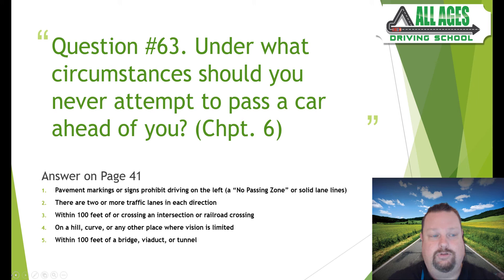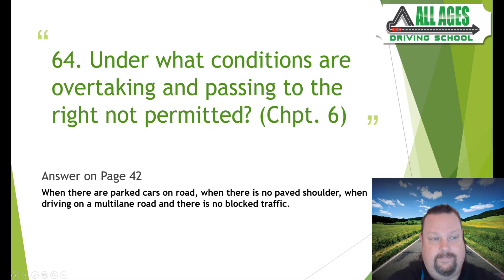Question number sixty-three: under what circumstances should you never attempt to pass a car ahead of you? Chapter six, answer on page 41. Never pass when pavement markings or signs prohibit driving on the left, in no-passing zones, when there are two or more traffic lanes in each direction, within 100 feet of an intersection or railroad crossing, on a hill, a curve, or any place where vision is limited, and within 100 feet of a bridge, viaduct, or tunnel.